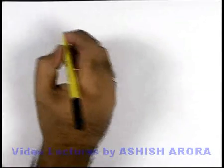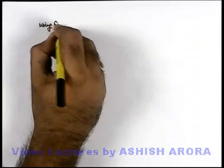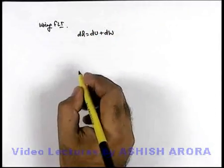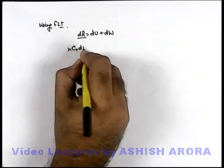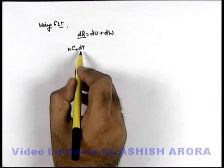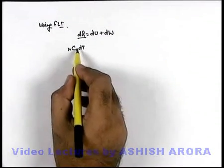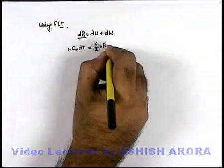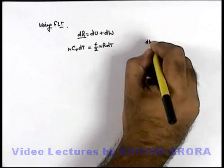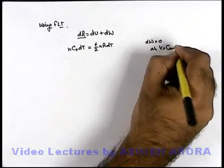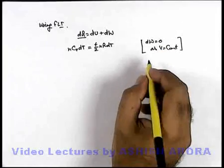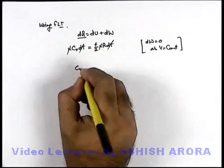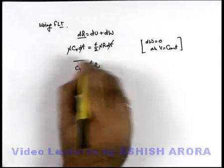We can specify the molar specific heat using the first law of thermodynamics. We write dQ = dU + dW. For constant volume, dQ = n·Cv·dT, and dU = (f/2)·n·R·dT. Since volume is constant, dW = ∫p·dV = 0. Cancelling n·dT from both sides, we get Cv = (f/2)·R.